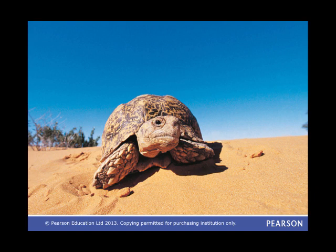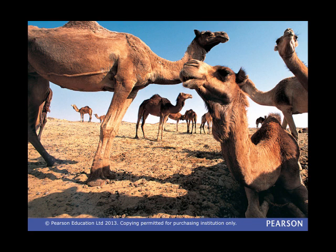This high degree of specialisation means arid regions are often fragile environments. The plants and animals cannot cope with changes to the narrow range of conditions they are adapted for. For example, plants may have adapted to survive for many months without rainfall, but if there is still no rain after that, they will die.